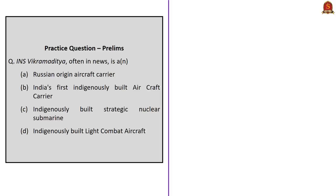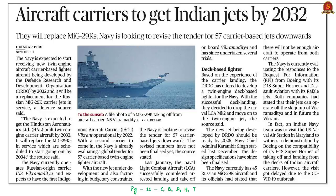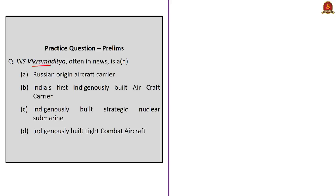Let's take up the question: INS Vikramaditya, often in news, is — we have framed this question because the news states that the Navy is expected to get an HAL-built twin-engine carrier aircraft by 2032, as a replacement for the Russian MiG-29K carrier jets. Know that the Navy is currently operating the Russian-origin aircraft carrier INS Vikramaditya, and is also expecting to have the first indigenously built aircraft carrier INS Vikrant by 2022. The correct answer is option A: Russian-origin aircraft carrier. India's indigenously built strategic nuclear submarine is INS Arihant, and the indigenously built light combat aircraft is Tejas.